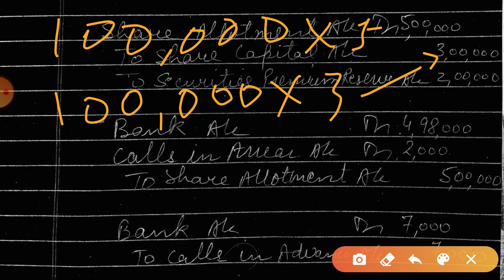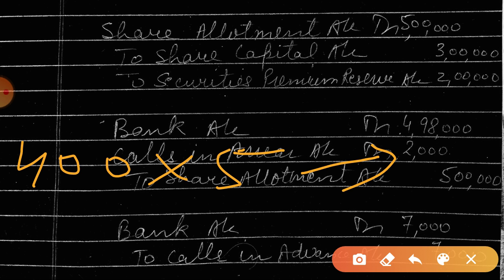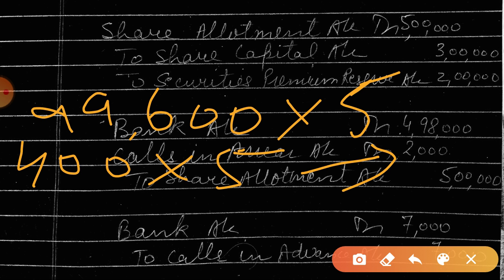Now how many shareholders have paid the amount? All shareholders have paid the amount except Kumar who was holding 400 shares. So let's calculate the amount: 400 shares at five rupees have not paid — 2000 rupees. That means remaining shares: 99,600. This way we will calculate the amount.